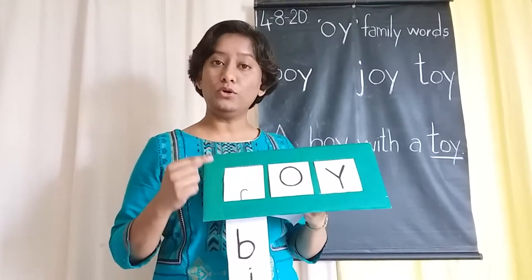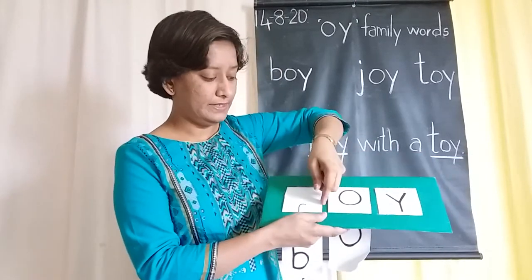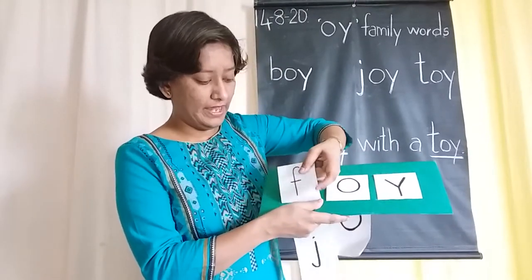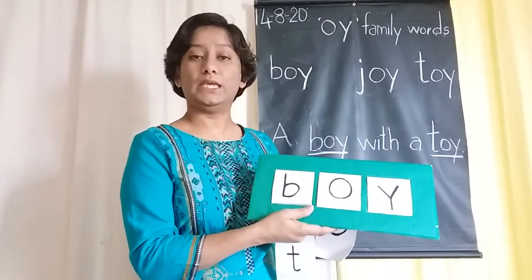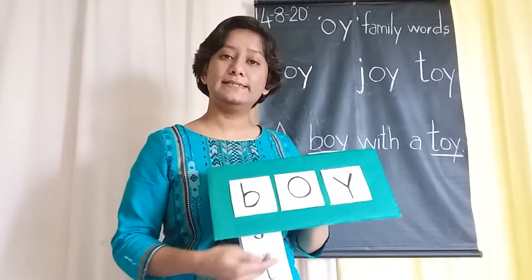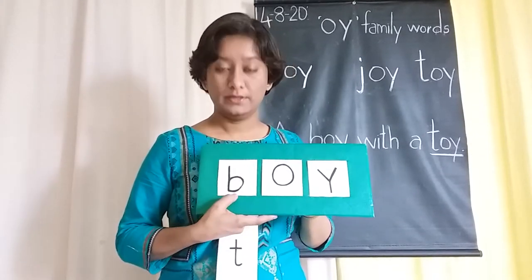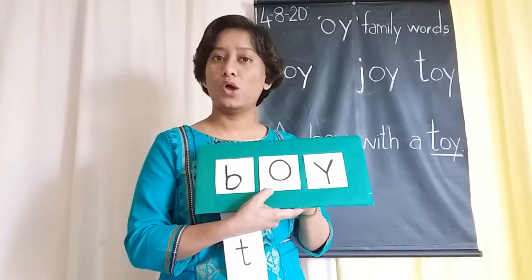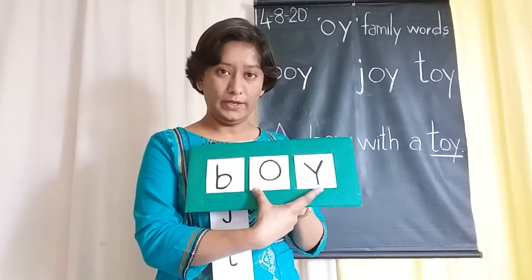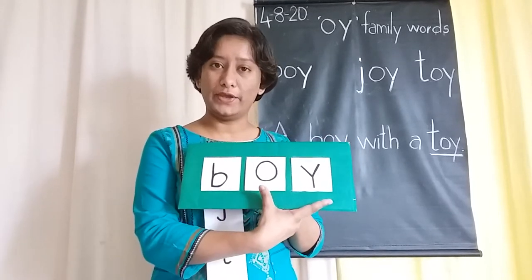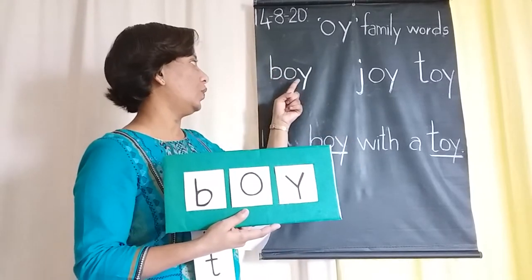For this I'm going to add a new letter. Let's see how it happens. This time I'm going to add letter B. B says B. O says AW, Y says Y. OI — BOY. That's the first word. B-O-Y, BOY.